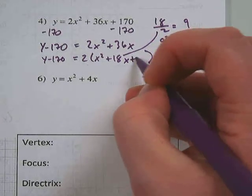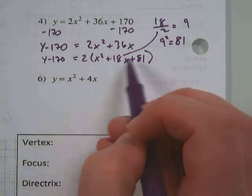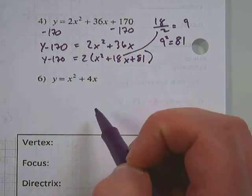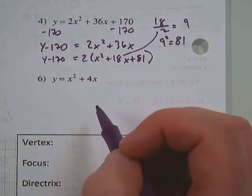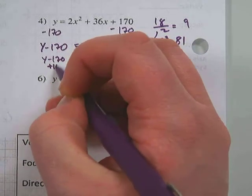So to this side, we are going to add 81. But really what we added was 2 times 81, since this 2 is out here outside of the parentheses. So we really added 162 to both sides. So we need to add 162 over here.